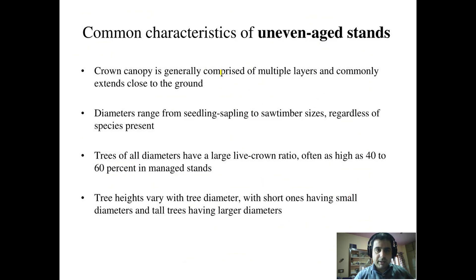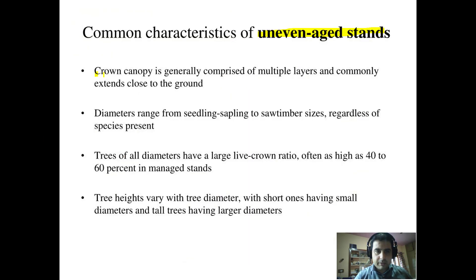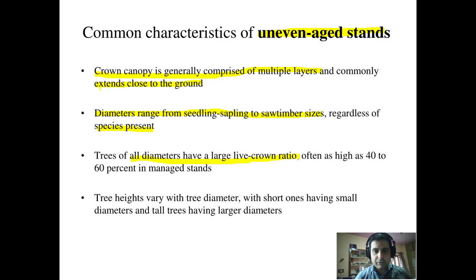Now, what are the common characteristics of uneven-aged stands? The canopy is generally comprised of multiple layers and commonly extends close to the ground, because there are multiple tiers including small trees near ground level. The diameter range extends from seedling and sapling sizes to saw-timber sizes, regardless of species.